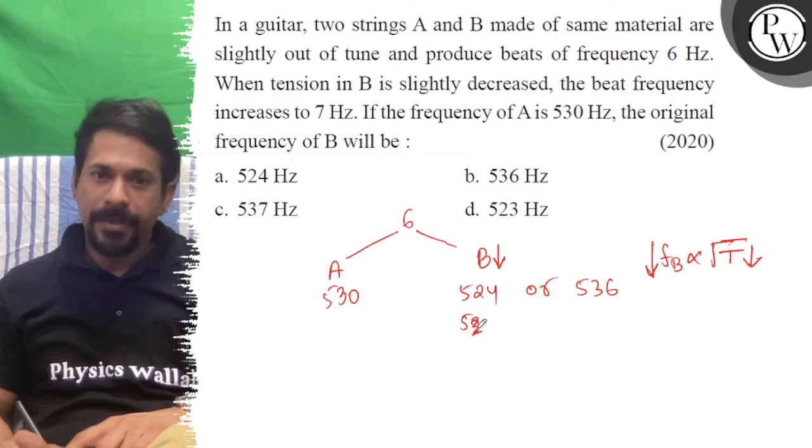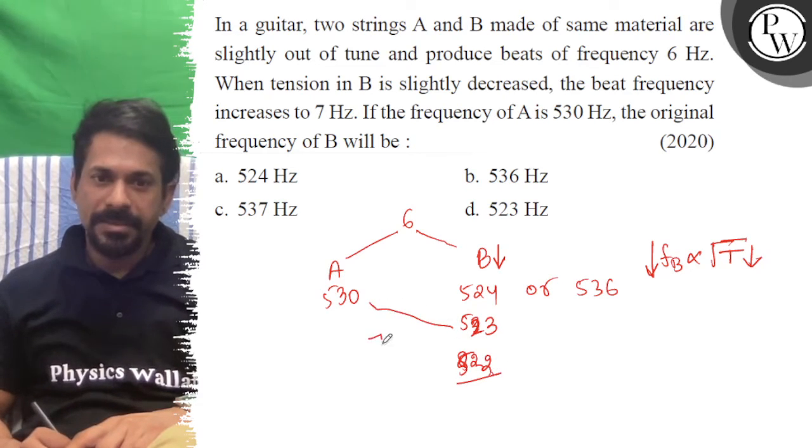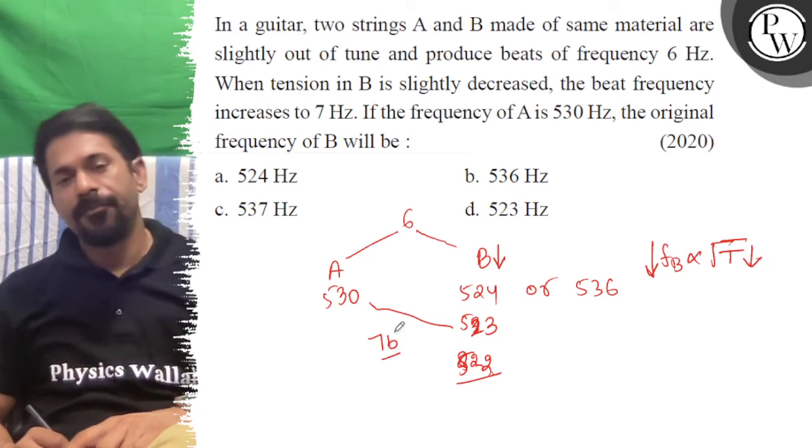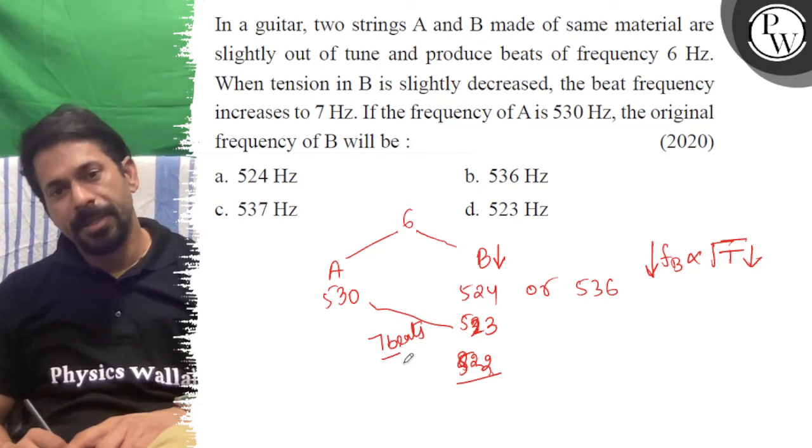So it would be 523, 522. So here we will get 7 beats per second.